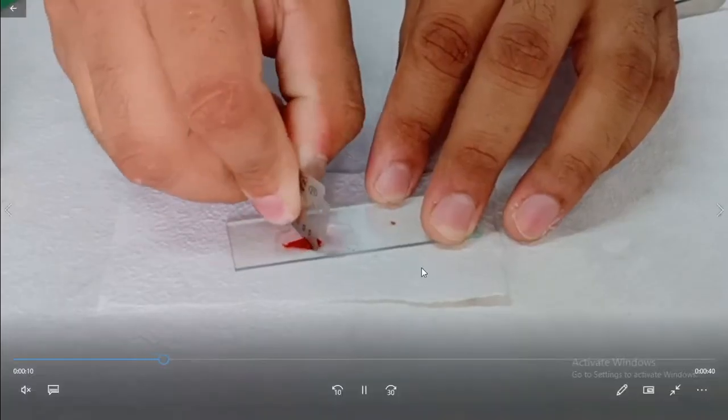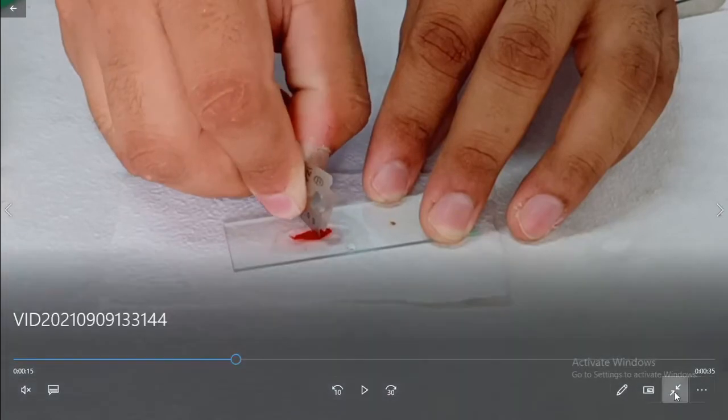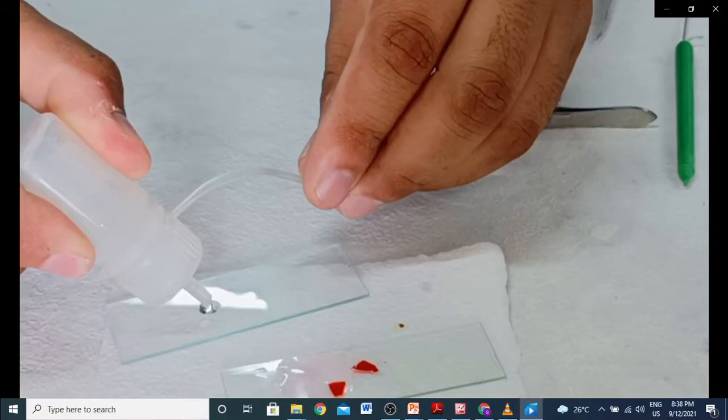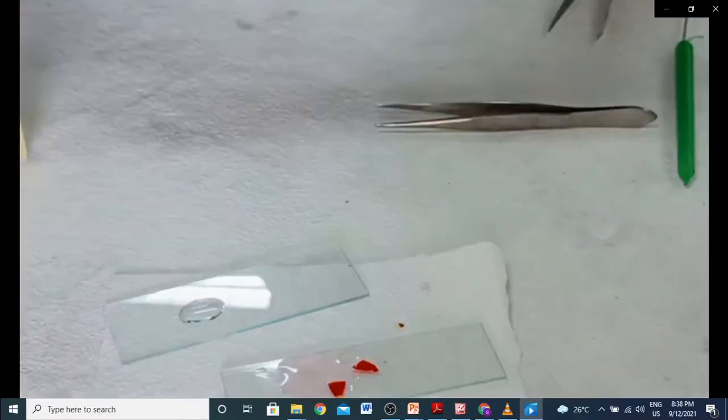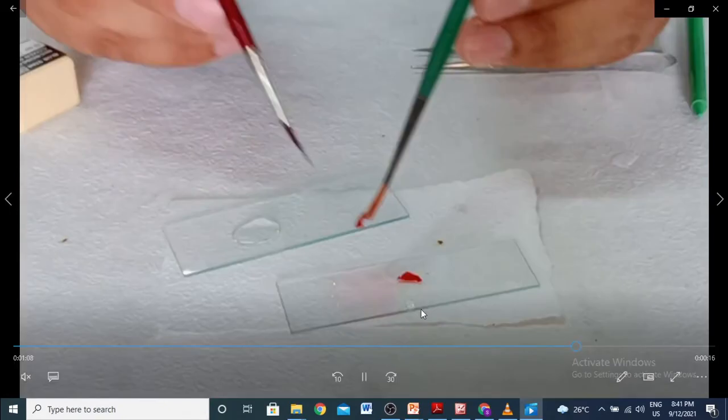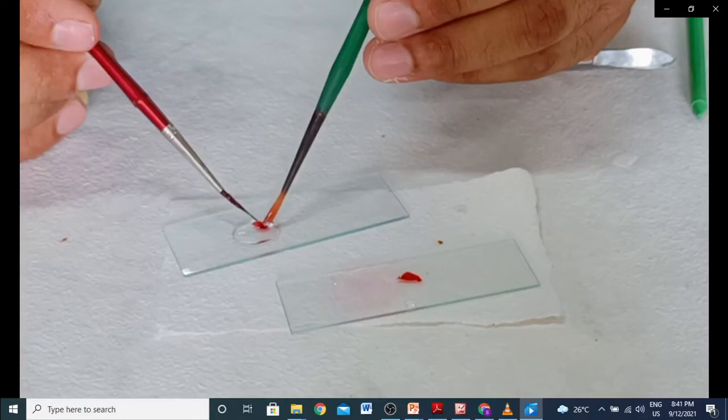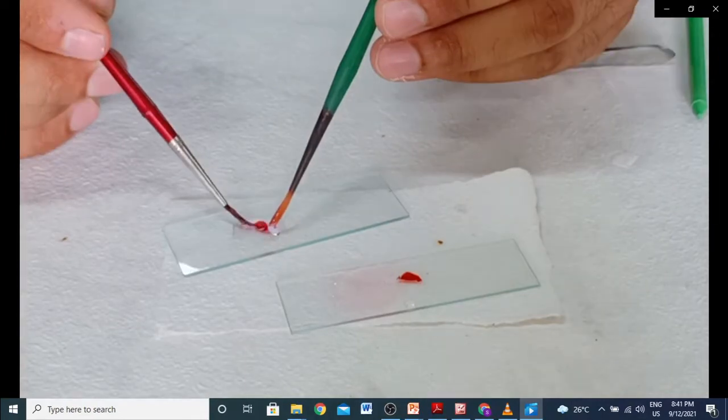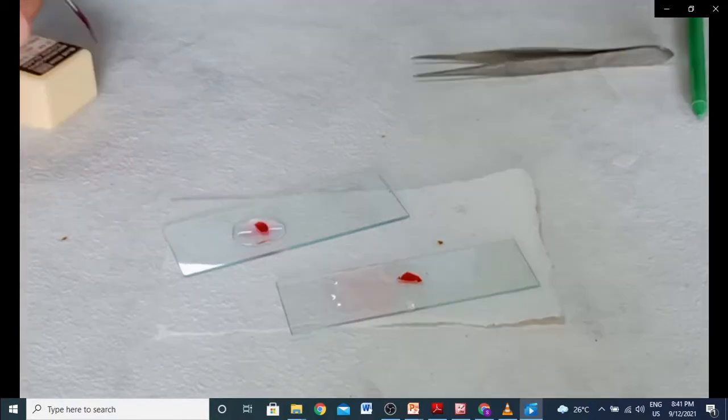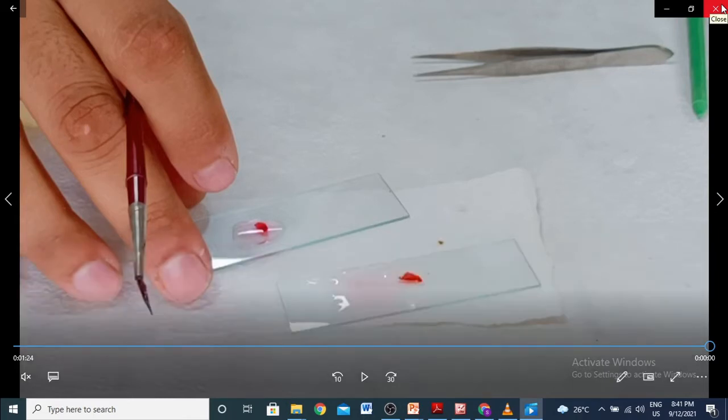If our peel is more than we required, we will cut it with the help of a razor. Now we will learn how to mount our peel on a slide. Take a clean slide and put a few drops of glycerin on it. With the help of a brush, transfer the peel on this slide. Make sure the peel is properly unfolded, because when we will observe our peel in a light microscope, cells will look overlapping with each other. That's why unfolding a peel is an extremely essential part.